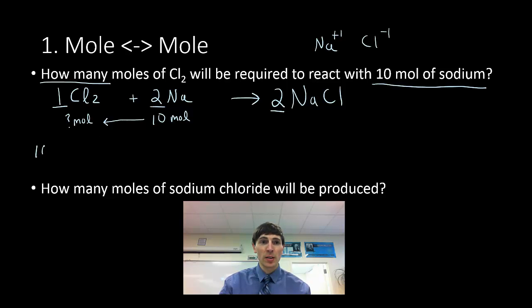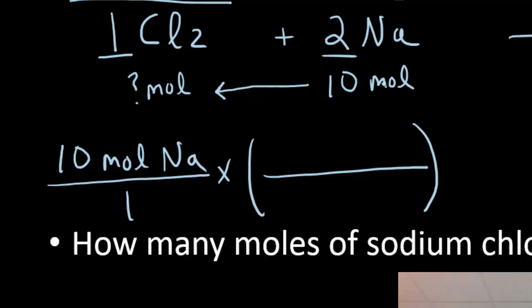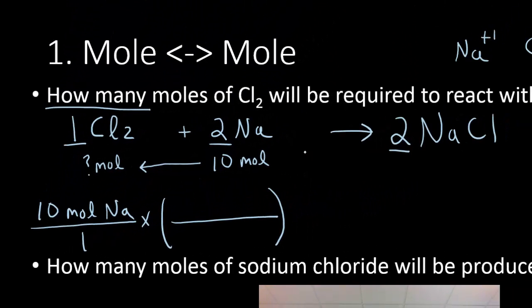The thing that was given to me, 10 moles Na, my starting quantity. I'm going to put that over 1 and I'm going to put a little bubble. So now what I'm going to do is I'm going to look back at my balanced equation and look at the equivalent statements or the conversion factors I can pull from that recipe for this reaction.